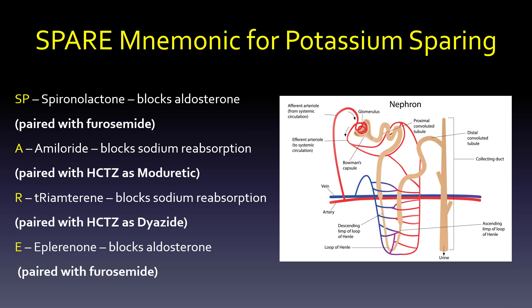Here's the mnemonic for potassium-sparing diuretics — SPARE — all together. Spironolactone blocks aldosterone and can cause gynecomastia. What's important here is that we pair these potassium-sparing drugs with the hypokalemic drugs. Spironolactone (which blocks aldosterone) pairs with furosemide; eplerenone (which also blocks aldosterone) pairs with furosemide as well.